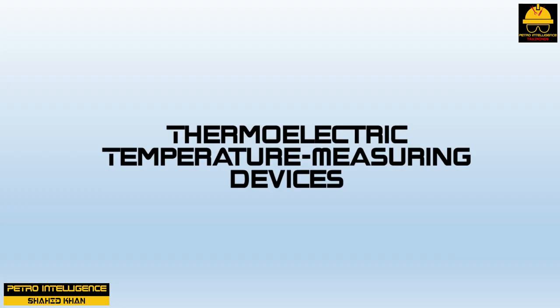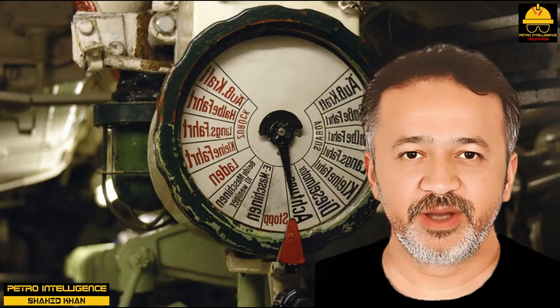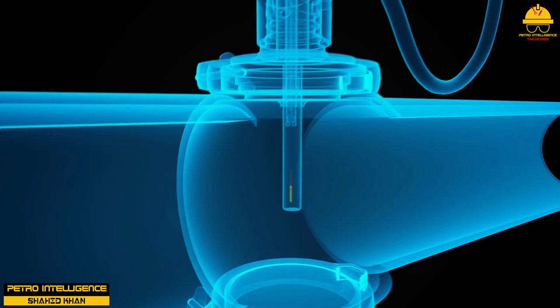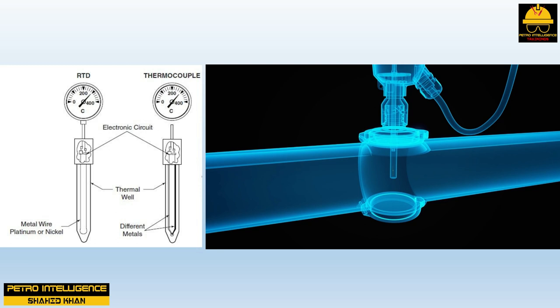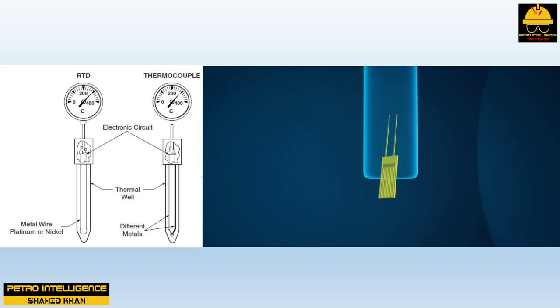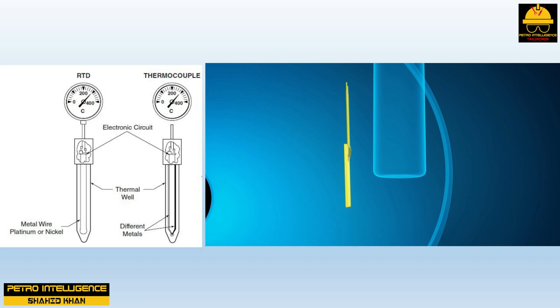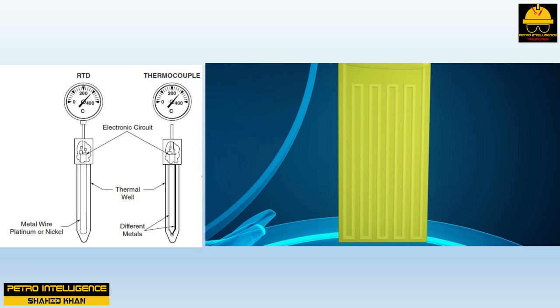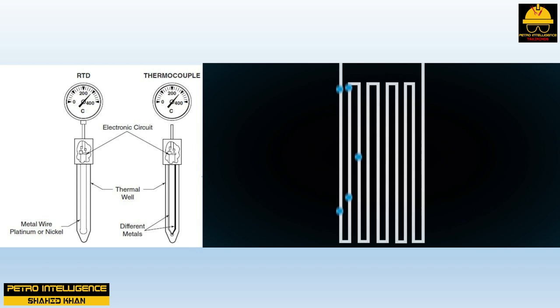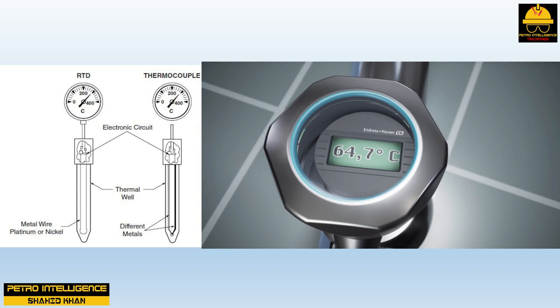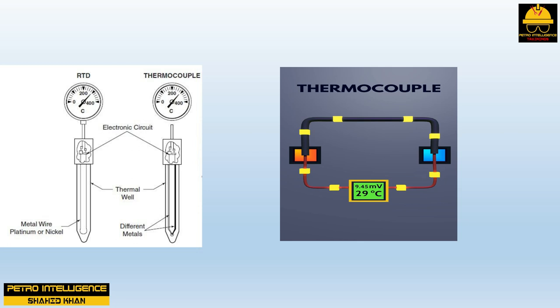The most common temperature measuring devices in the chemical processing industry are thermoelectric devices, which come in two types: resistance temperature detectors (RTDs) and thermocouples. Both are held in a thermowell, a chamber installed in vessels or piping. An RTD is composed of a small platinum or nickel wire encased in a rugged metal tube; the electrical resistance in the wire is influenced by changes in temperature. Temperature changes in an RTD are sensed by an electronic circuit and directed to a temperature indicator.